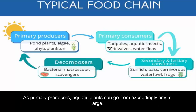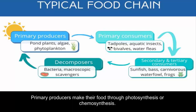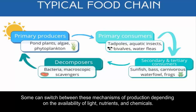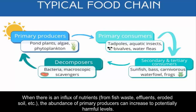As primary producers, aquatic plants can range from exceedingly tiny to large. In contrast, microbial producers are extremely small and will generally be present in numbers that are exponentially greater than those of consumers and decomposers. Primary producers make their food through photosynthesis or chemosynthesis. Some can switch between these mechanisms depending on the availability of light, nutrients, and chemicals. In ornamental and wildlife ponds, the typical components of this trophic level include submerged, marginal, and floating plants, along with algae and cyanobacteria. When there is an influx of nutrients from fish waste, effluents, or eroded soil, the abundance of primary producers can increase to potentially harmful levels.